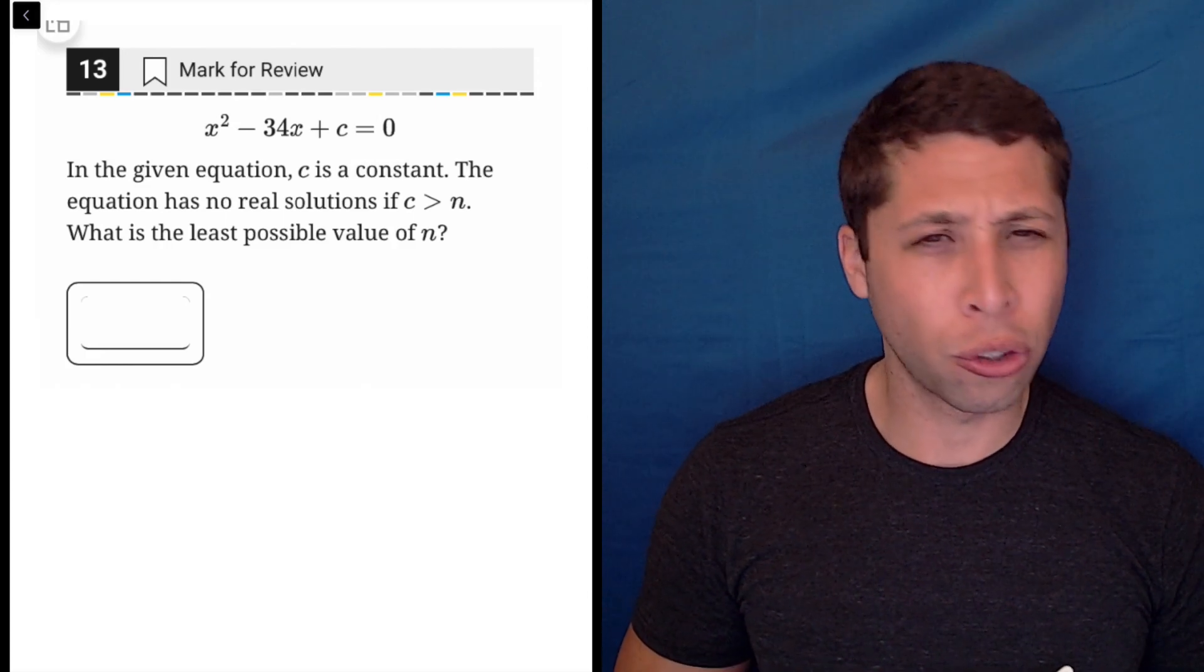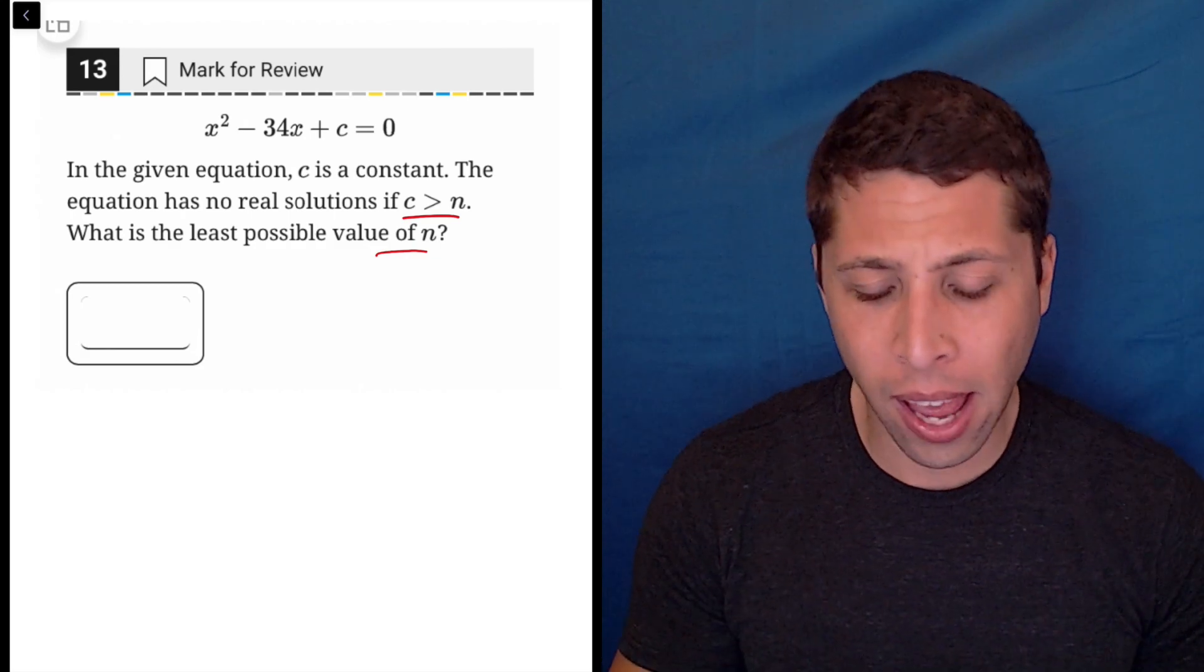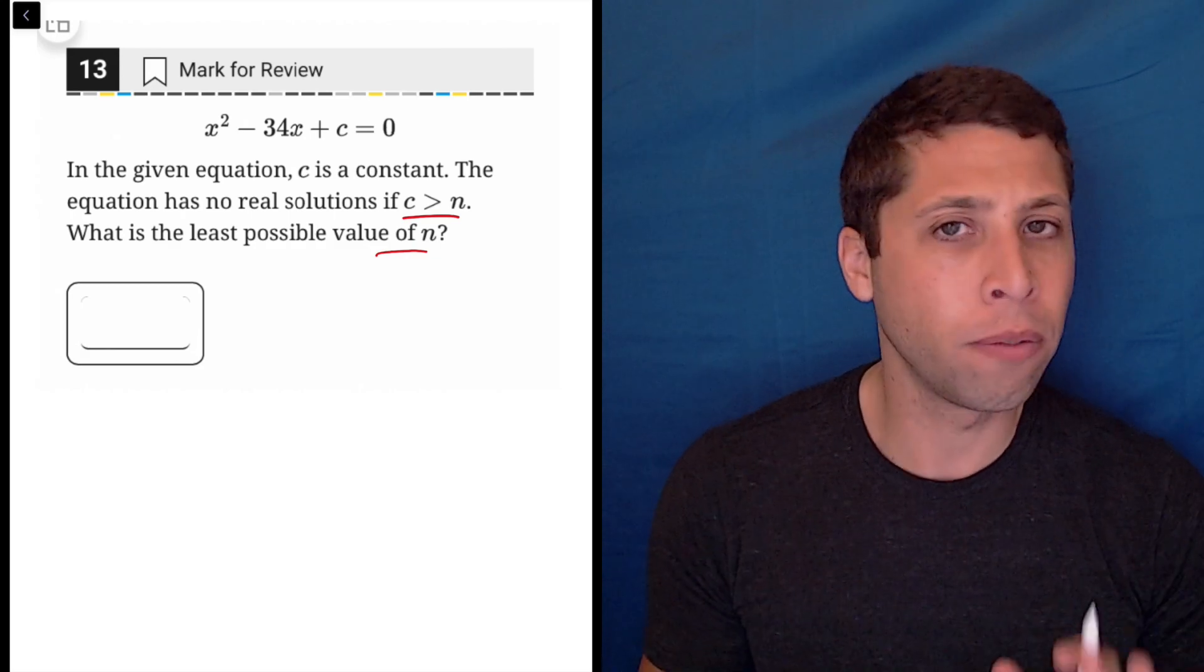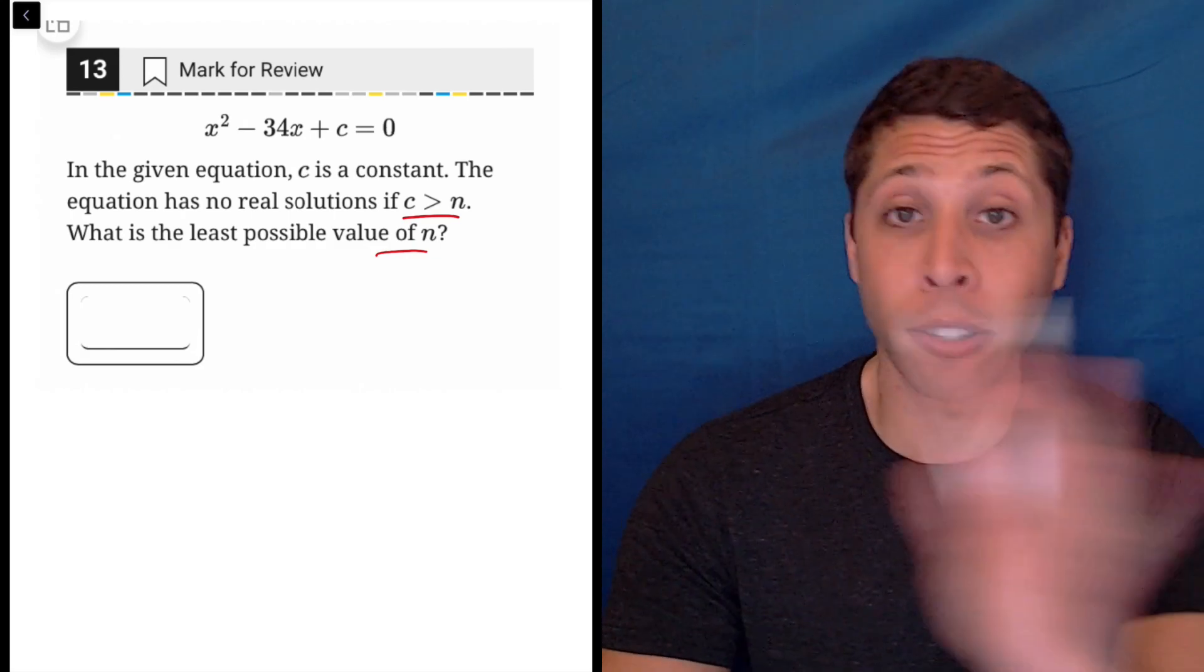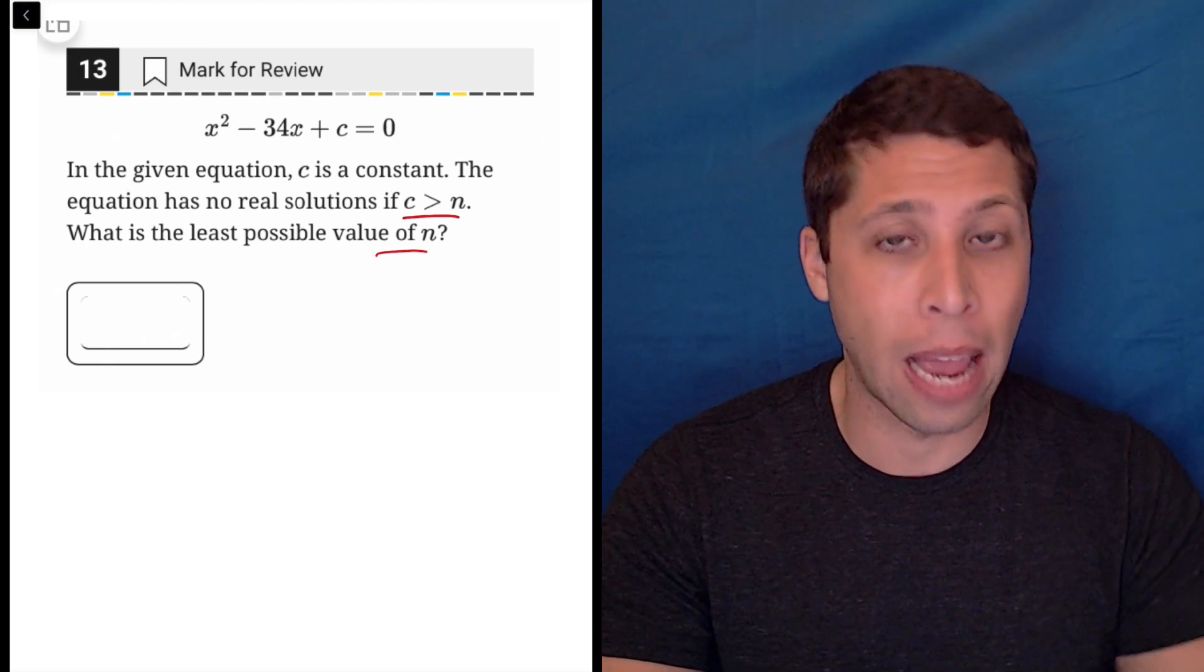This question is worded in a very strange way. I don't really understand why they did this with this N thing. It's really just confusing and I would ignore it because I understand the rest of the question and it's very straightforward because the SAT asks about this type of thing a lot.